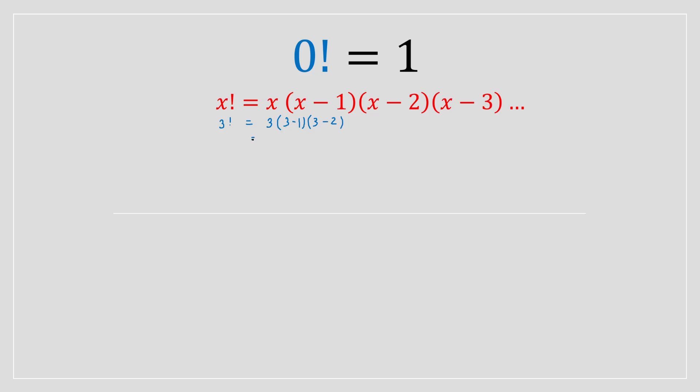So this here is going to be 3 multiplied by 2, and this here is 3 minus 2, which is 1. So ultimately this is going to equal 6. So this formula is true for any factorial number. You could have 10 factorial, you could use this formula.